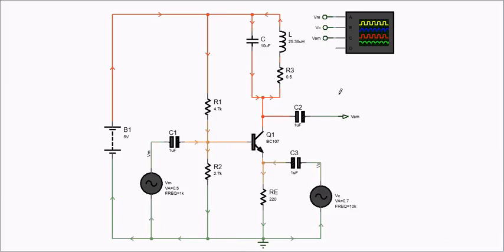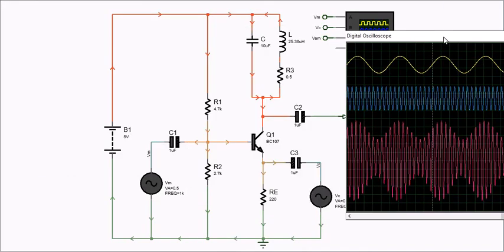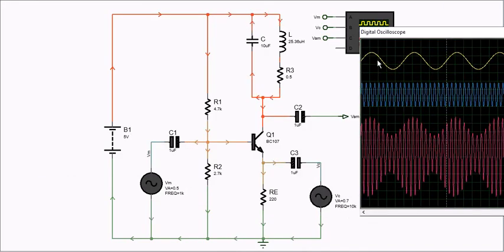This configuration modulates the amplitude of the carrier based on the input message signal. To prove that this circuit is producing an AM signal, we will show the output signal waveform and the frequency spectrum. This is the message signal, this is the carrier signal, and this is the output AM signal waveform.